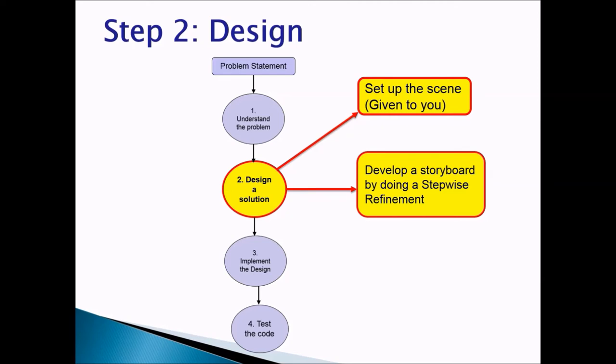Now we'll take a look at step two, design. Design a solution. We're going to set up the scene. Now the scene is given to you. All you have to do is create a storyboard by doing a step-wise refinement. So when you do a step-wise refinement, make sure you have the beginning of the story. The beginning of the story is basically where the hare is going towards the first jungle plant. Then you'll create a hop procedure with parameters and you would make the hare hop. And the last one is you will create an end where the hare goes away from the scene.